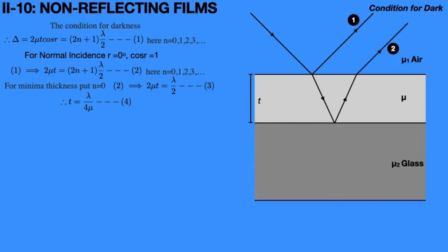Hence, if the thin transparent film has a thickness t equal to lambda by 4 mu, then it will act as a non-reflecting film. So we will find out the required refractive index for this thin transparent film. In order to find the refractive index of this thin transparent material, we will use Fresnel's equation. So for complete destructive interference, we can write IR1 equals IR2. Hence, the intensity of reflected light in air medium equals the intensity of reflected light in the transparent material.